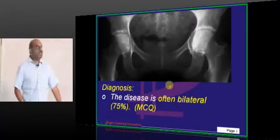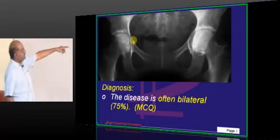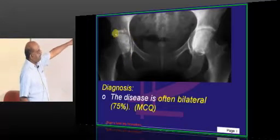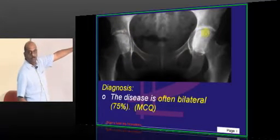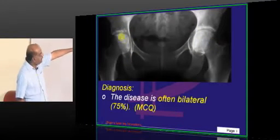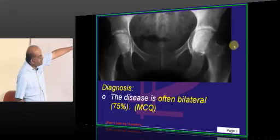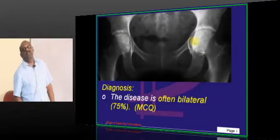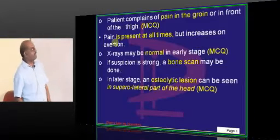Usually avascular necrosis is bilateral — both sides. Are you able to see that increased osteosclerosis? That is the avascular necrosis.